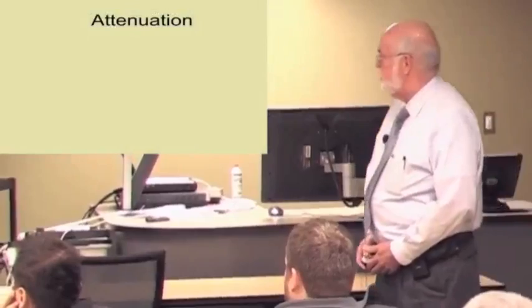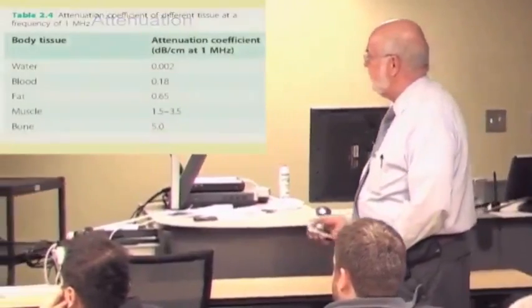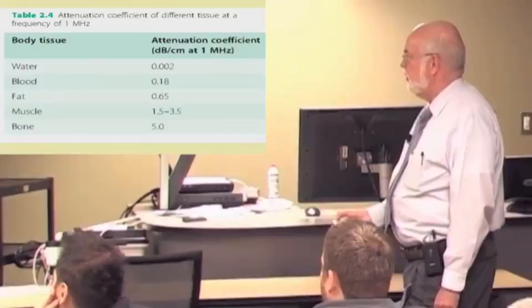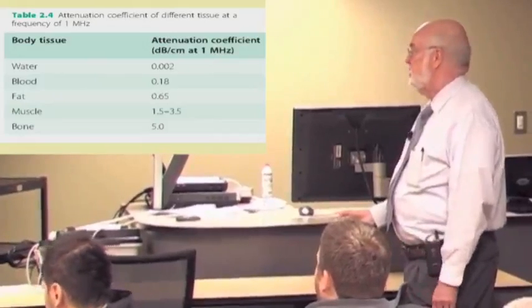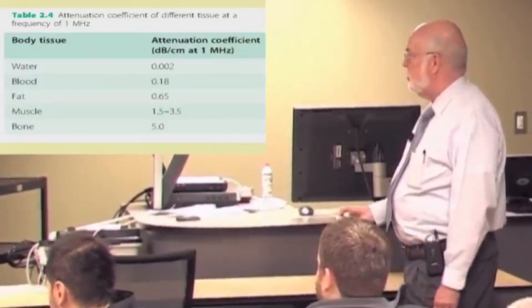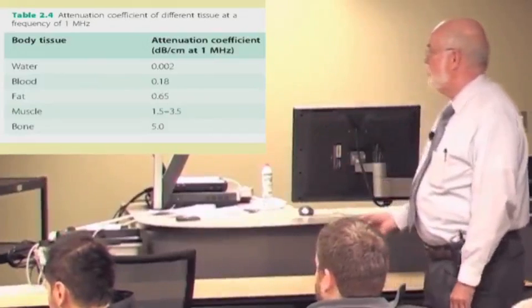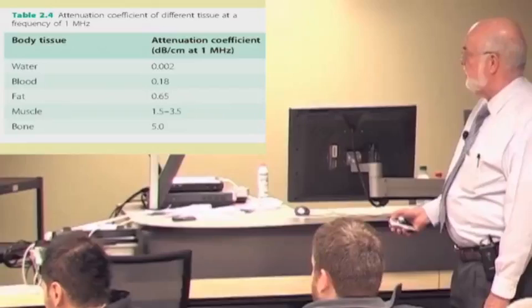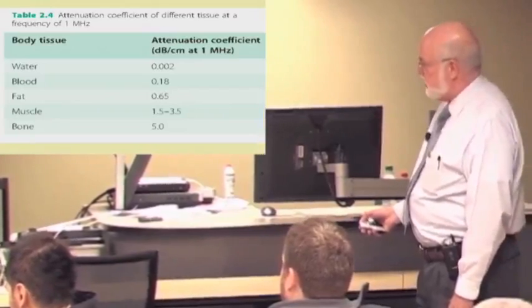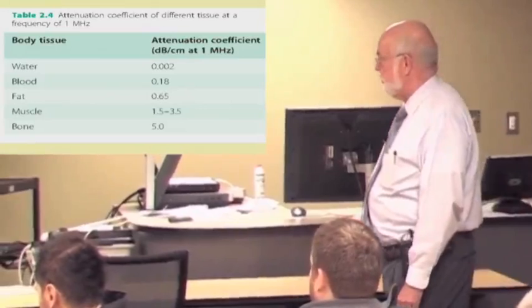Attenuation we've already alluded to, but again it's different depending on what material you happen to be going through. If you're going through water or urine or a cyst in the kidney, there's almost no attenuation, so almost all the energy gets through. If you're going through blood, there's a little bit more, through fat a little bit more, through muscle and most typical organs a little bit more.